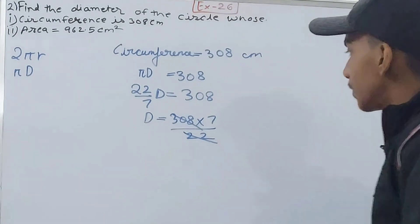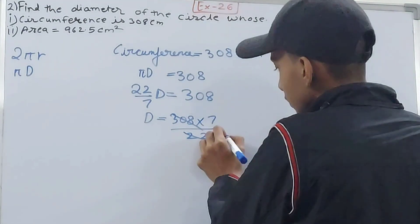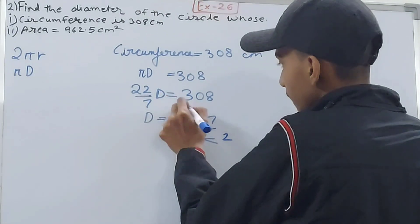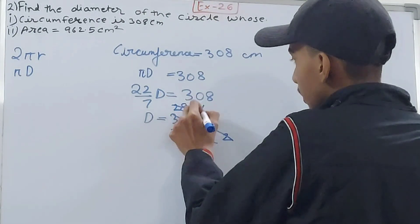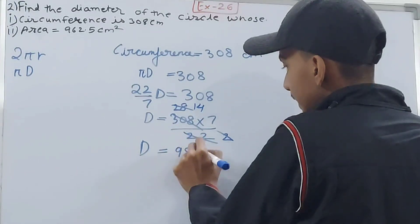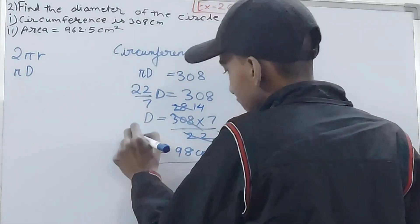Now we can cancel these things. This will cancel, this will go 2 times, this will go 2 again, and 14 times. So diameter is equal to 98 centimeters in the first case.